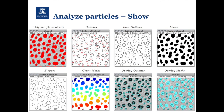Finally, the Show function controls what images are produced when running Analyze Particles. The Outlines option draws an outline around each particle and assigns a number. Bare Outlines does the same without numbers. We can create a new Mask, show fitted Ellipses, or use Count Masks which produces a different color for each object. Overlay Outlines overlays the outline and number over the original image, and Overlay Masks creates a colored mask with numbers over the original image.